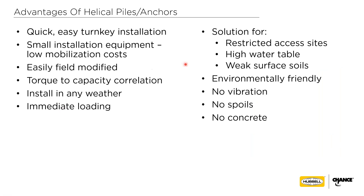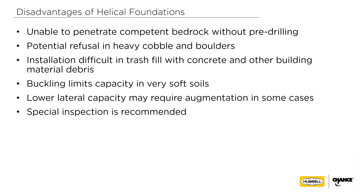Some advantages: torque correlation is one of the big advantages for helical anchors and piles. The equipment is usually relatively small. They can also be removed, which in some cases is a great advantage. They can be used virtually anywhere, produce no spoils because they are displacement elements. The more important attributes are smaller equipment, torque correlation, and immediate loading — we'll talk more about those when we get to why and under what conditions to use them.